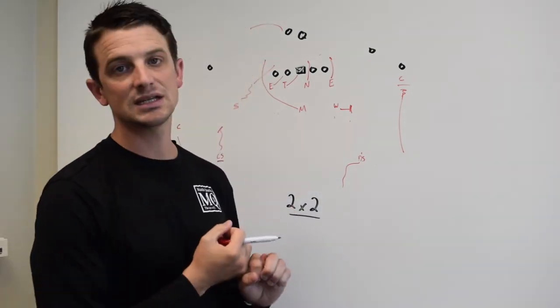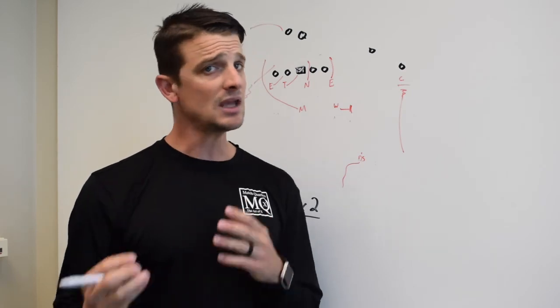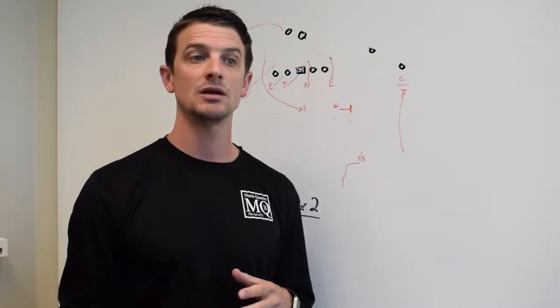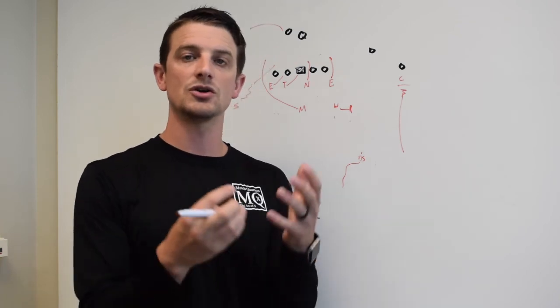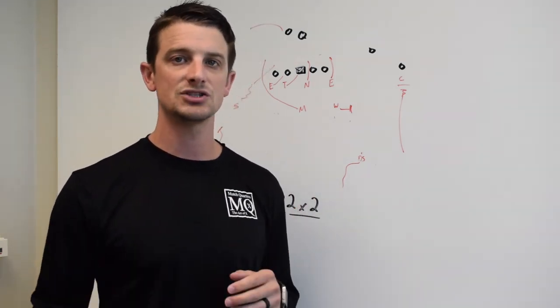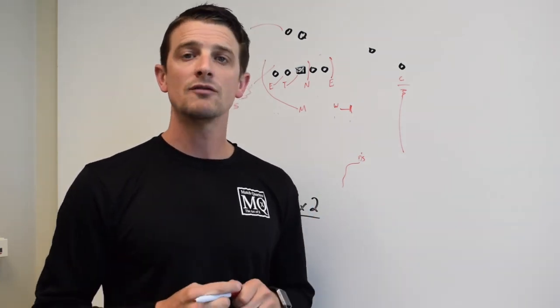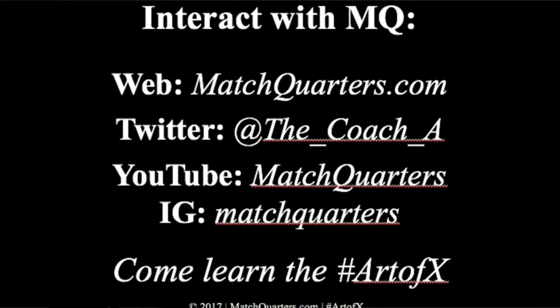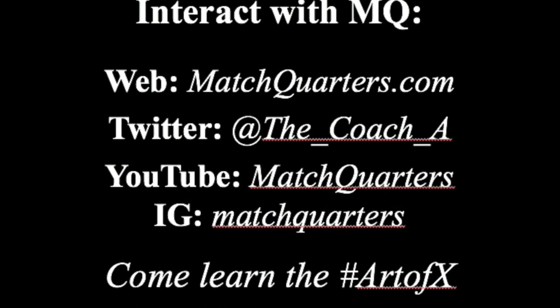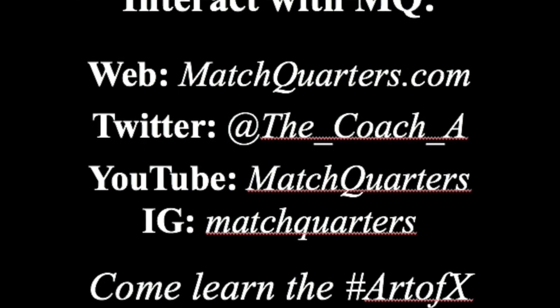So again, we talked about what's the difference between a blitz and a pressure. If you're a three-down team and you're only sending one person, you're really putting yourself into a situation where you become a four-three. Your coverage distribution really doesn't change, you just lose that extra guy in coverage. Thank you again for watching Quick Hits. You can find me at matchquarters.com or follow me on Twitter at underscore coach underscore A. Thank you.